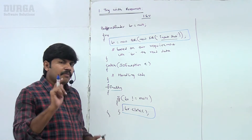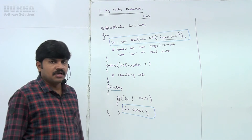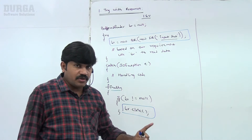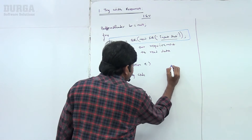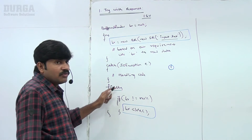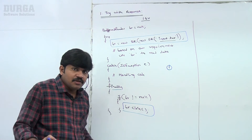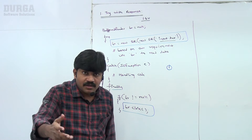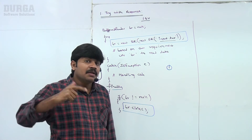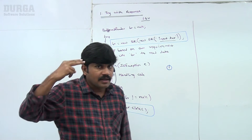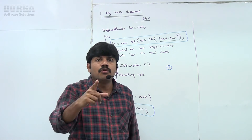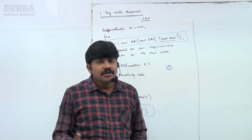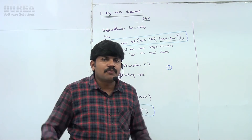There are two problems with this approach. Problem number one: whatever resources we opened in the try block, we compulsorily have to close them inside the finally block. If you do not close a resource, it may be wasted or blocked. The programmer is responsible to close them inside the finally block. It's like keeping a gun on the programmer's head saying — hey, whatever resource you open in the try block, you must close it inside the finally block. This is a mandatory activity for the programmer, so complexity of programming is going to increase.